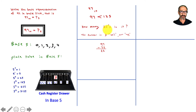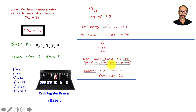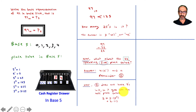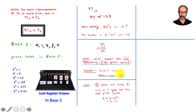Now looking at fives: how many fives are in 22? That's four fives — 4 times 5 is 20 — with a remainder of two. So four goes in the fives place, and the remaining two goes into the ones place, since 2 equals 2 times 5 to the power of 0. We answered it without dividing, just using the concept.